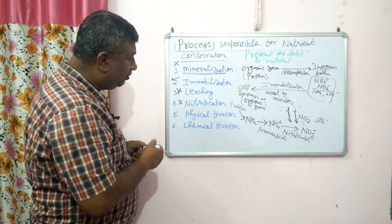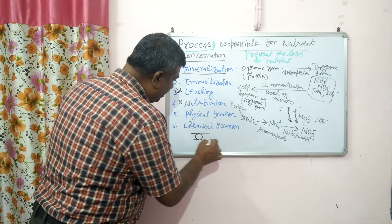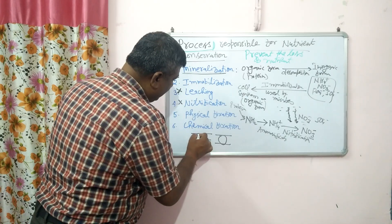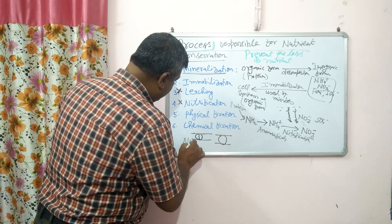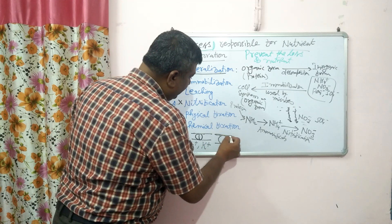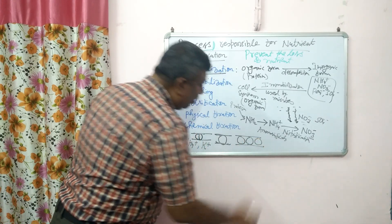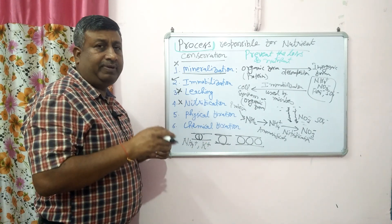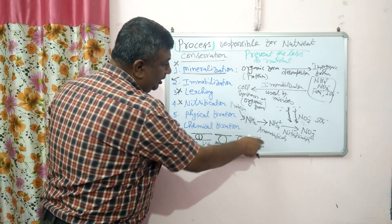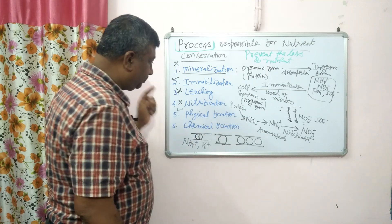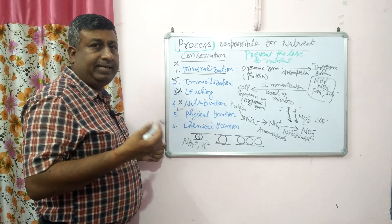Now, physical fixation. In 2:1 type silicate clay, ammonium and potassium ions get fixed between the clay layers because their ionic size is just equal to the inter-clay layer space. So these ions — particularly potassium and ammonium — become fixed within the clay structure, preventing them from remaining in soil solution and preventing leaching loss.